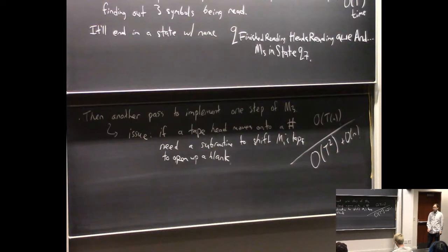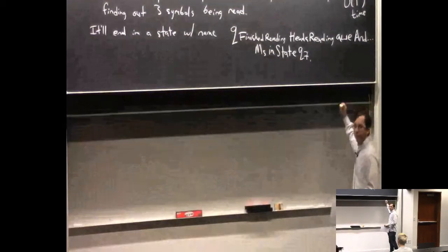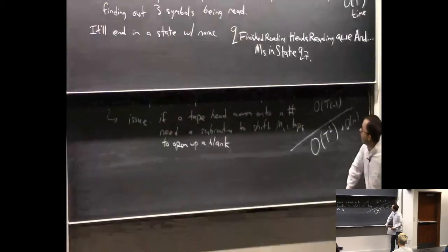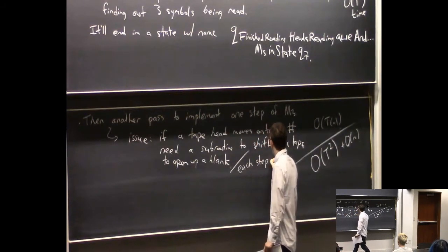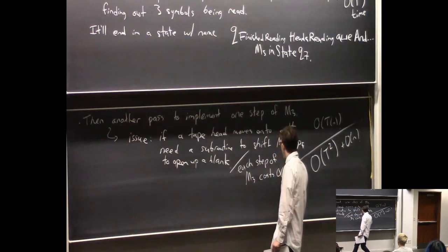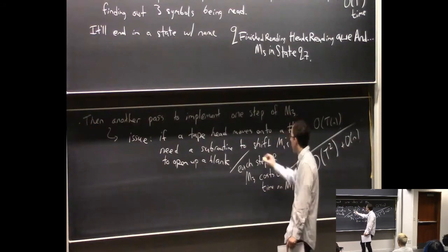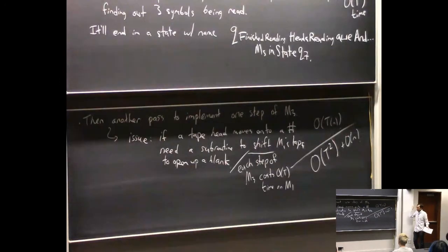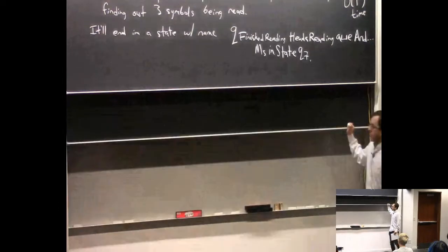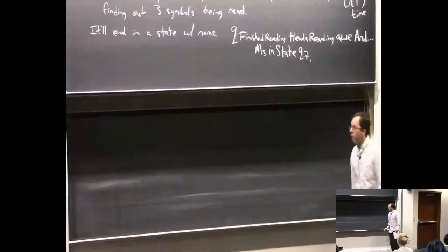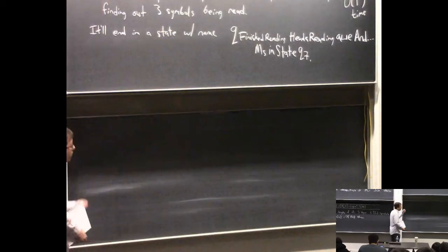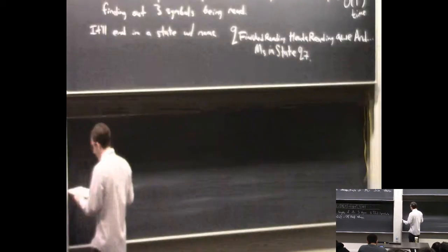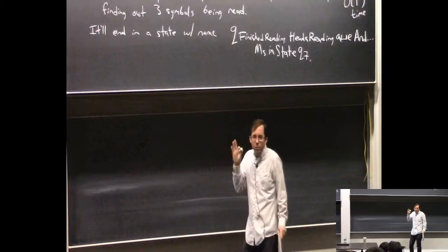Each step of M3 costs order T time on M1. M3 does at most T steps total, so the full simulation is order T squared time plus order n for initialization. Multi-tape Turing machines are in many ways nicer than one-tape Turing machines — that's why they're often used as the default model of computation. For example, they often give more realistic run times for problems.